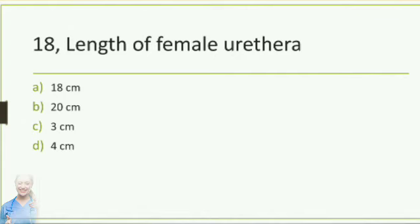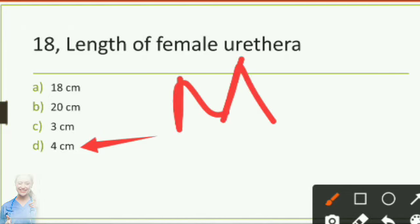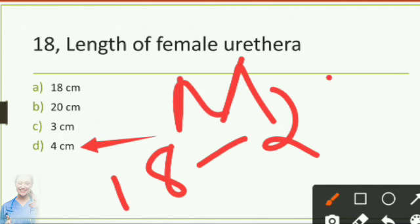Length of female urethra: option C 3 centimeters, option D 4 centimeters. The answer is option D, 4 centimeters. Length of female urethra is 4 centimeters, and length of male urethra is 18 to 20 centimeters.